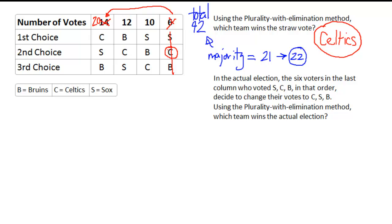So according to the monotonicity criterion, this is actually a good thing for the Celtics. They won the straw vote, and they should win because they now have more first place votes. They should win the second election, the actual election.